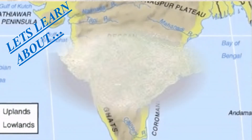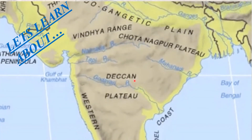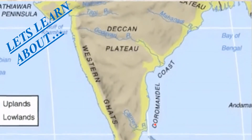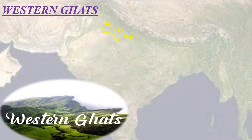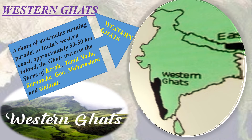Moving ahead, we will discuss about the ghats. Ghats refer to the converging mountain ranges in southern India — the eastern ghats and the western ghats — running along the eastern and western seaboards of the country. The western ghats, also known as Sahyadri, extend from the Tapi valley in the north to Kanyakumari in the south, forming a continuous chain that runs almost parallel to the western coastal plain.